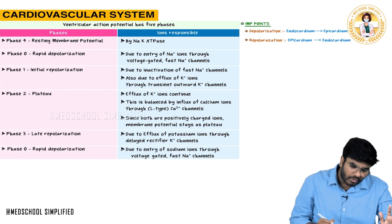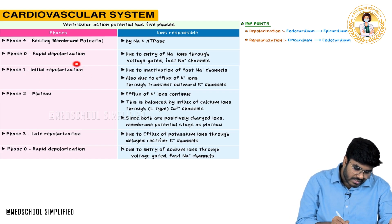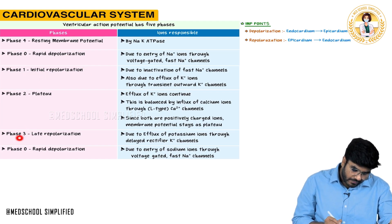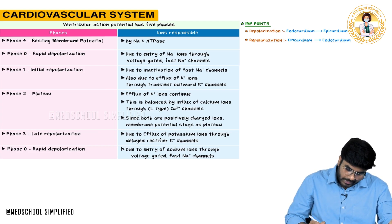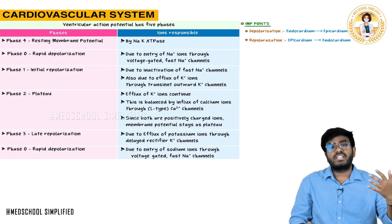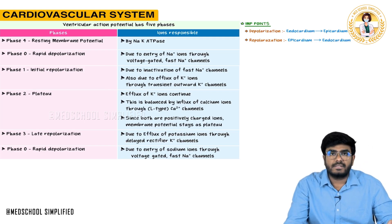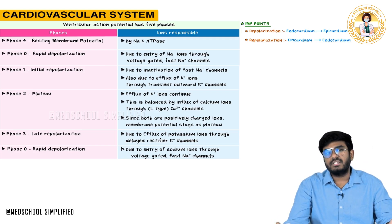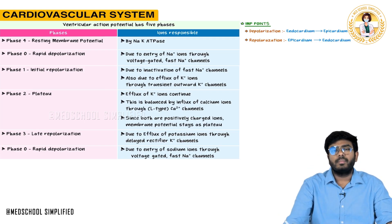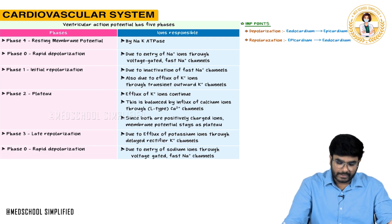In phase three — late repolarization — potassium continues to go out in greater amounts through the delayed rectifier potassium channels. More and more potassium is going out, bringing the membrane potential back down to resting — minus 90. Phase zero is rapid depolarization, already discussed.